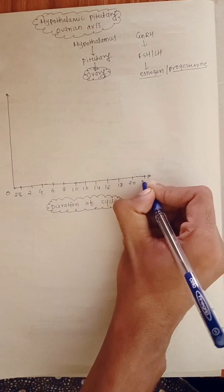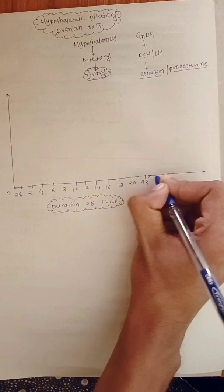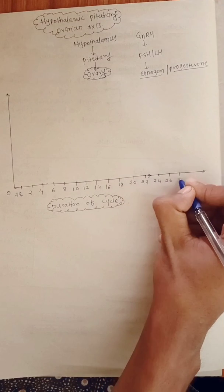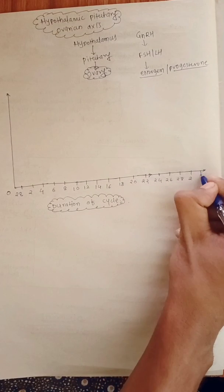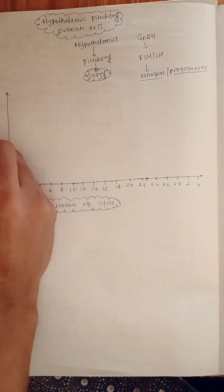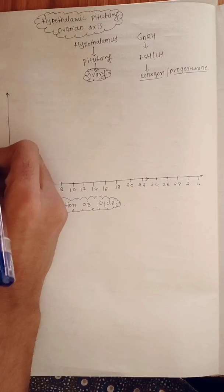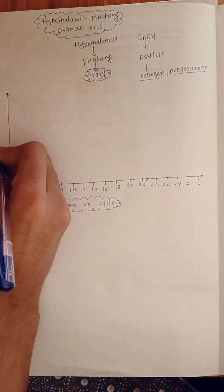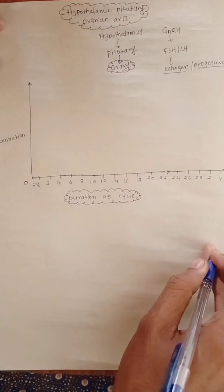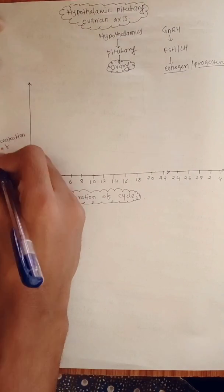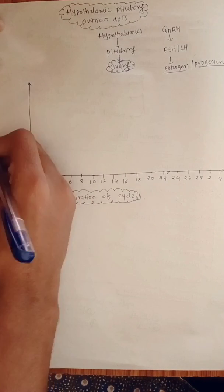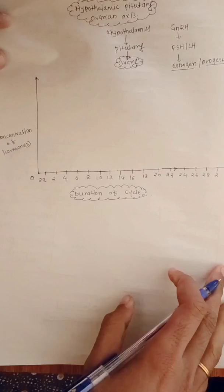The normal menstrual cycle is under hormonal control, and these hormones are released from the hypothalamic-pituitary-ovarian axis — that is, from the hypothalamus, gonadotropin-releasing hormone is secreted, then FSH and LH, and then estrogen and progesterone. So four main hormones are important during the menstrual cycle: FSH, LH, estrogen, and progesterone.